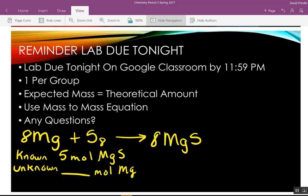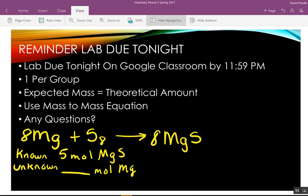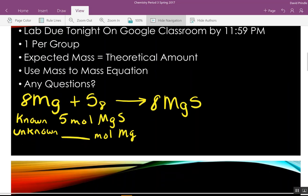So what kind of problem is this? Mole to mole, mole to mass, mass to mass, mass to mole. What is it? It's mole to mole, right? Because you're starting with moles and you've got to get the moles. So this is the simplest problem.